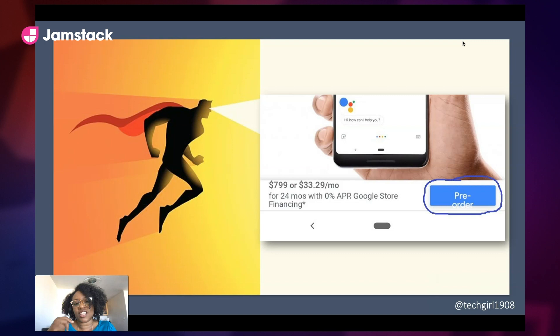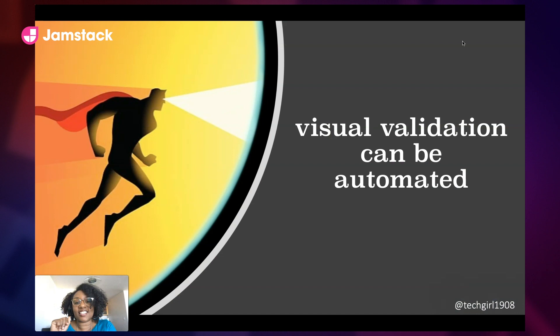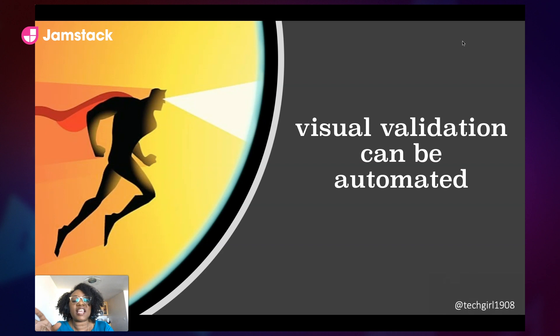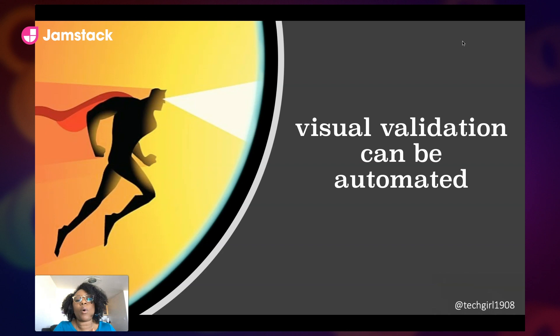The great news is that we don't have to live like this — visual validation can be automated and we can add these to our tests. Visual validation, or visual testing, is where you take a screenshot of your application when it's in its pristine state — this is the golden master. And then on your regression runs, you take another screenshot and compare the two. Visual testing is not something entirely new in the industry; it's been around for quite a while. However, the technique we were using as an industry — comparing pictures pixel by pixel — not so great for testing.